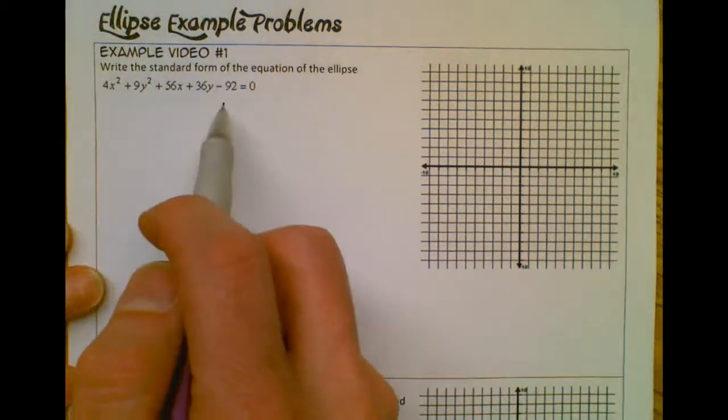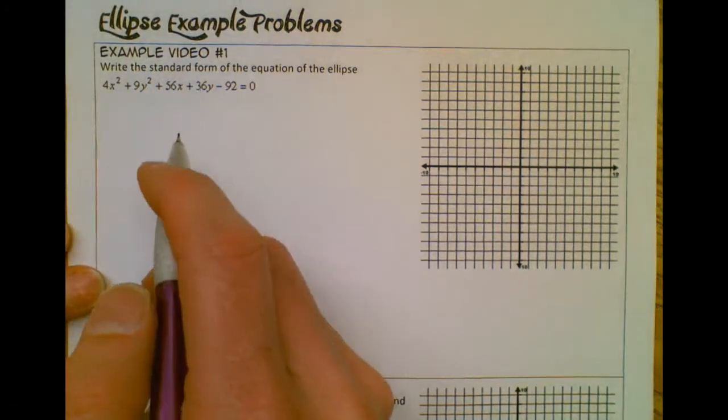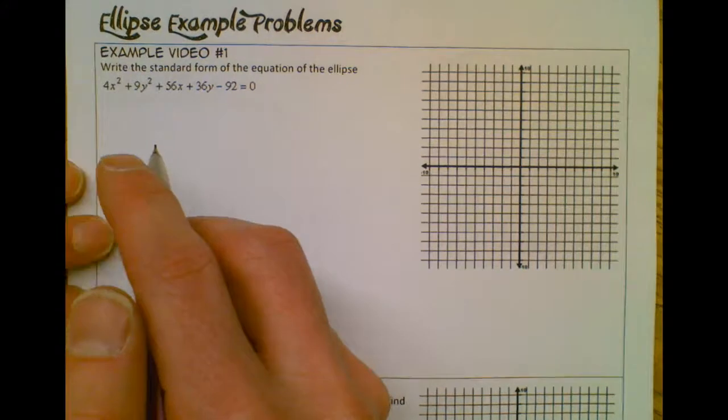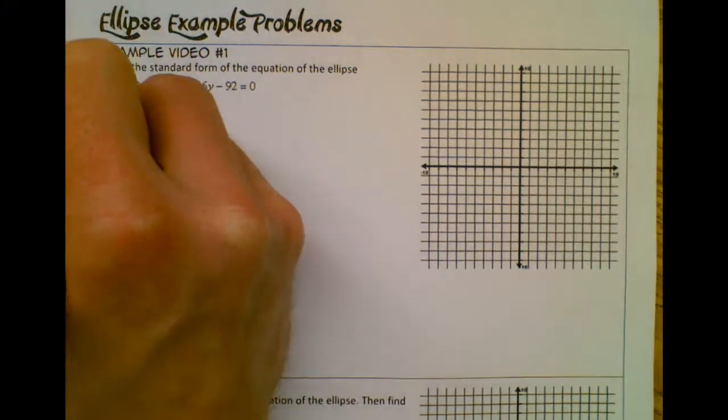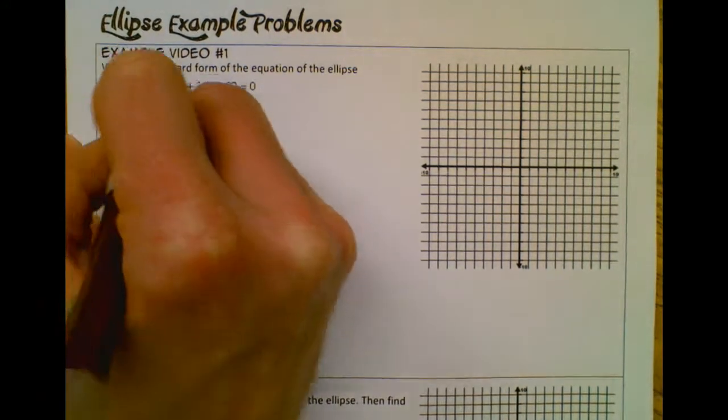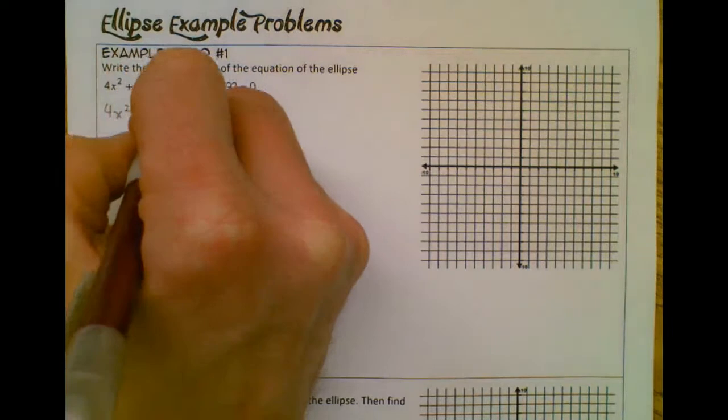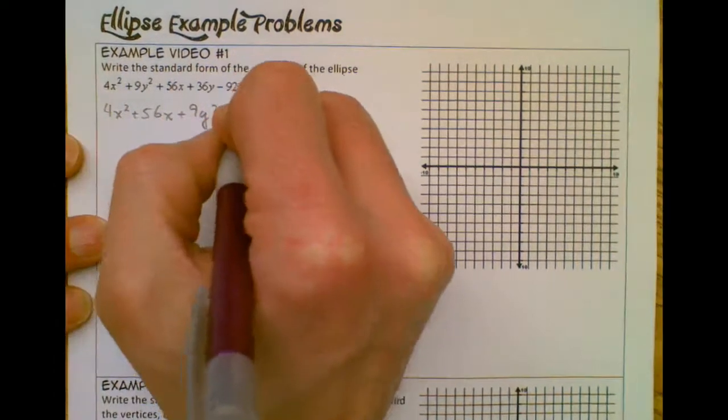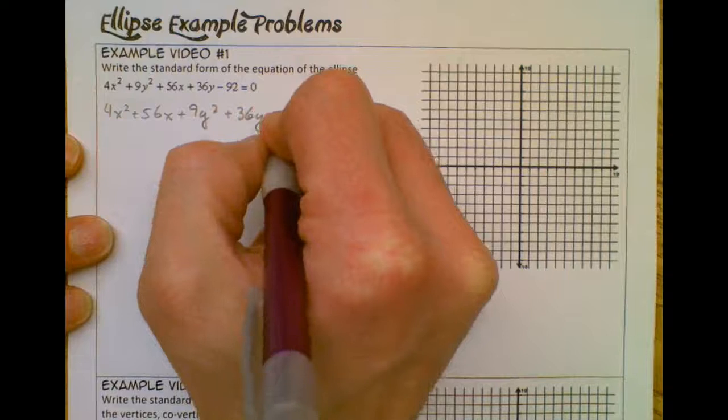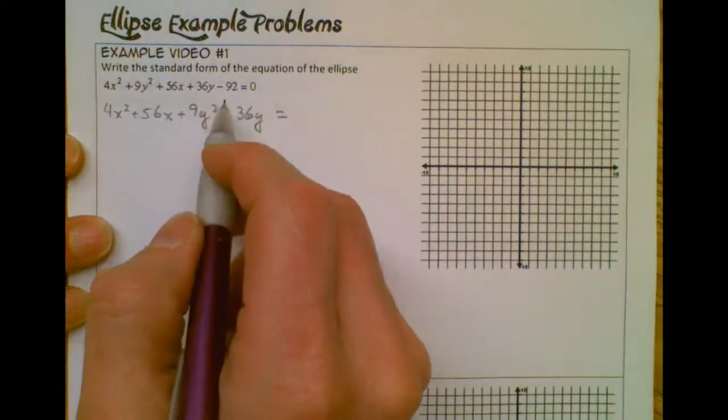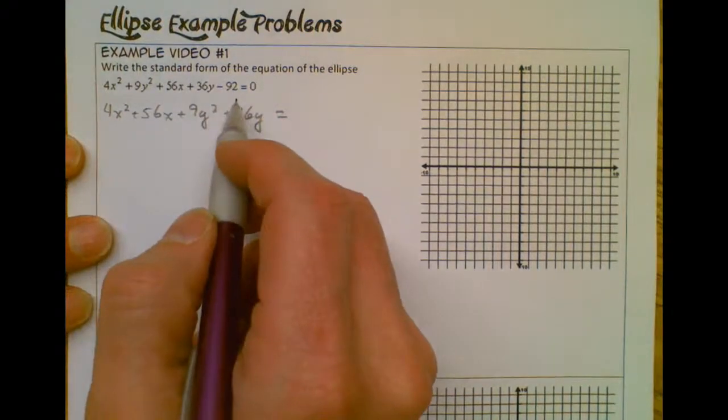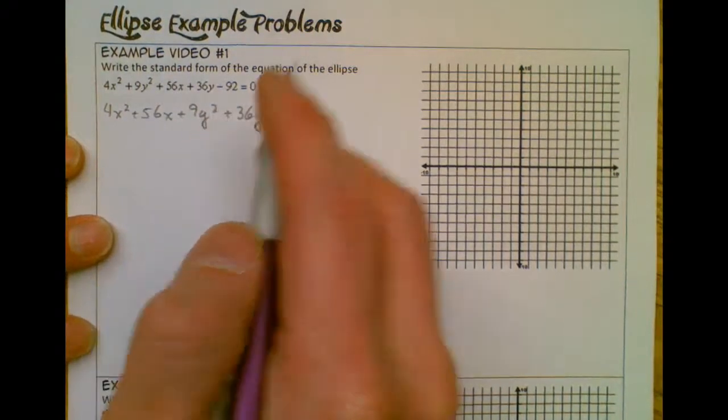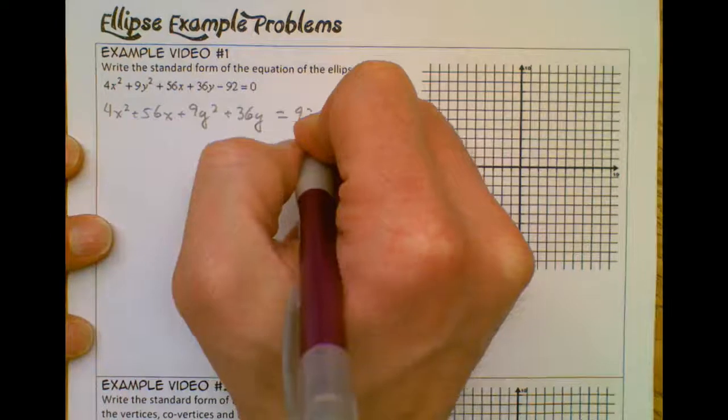So when we're starting in general form here, remember the first thing that we want to do is rearrange a little bit. So I'm going to rearrange to put my x's together. So I have 4x squared plus 56x. And then I'm going to put my y's together, so I have 9y squared plus 36y. And I'm going to move my constant over to the other side. So basically since it's minus 92 over here, I'm going to add 92 to both sides. So it's equal to 92.